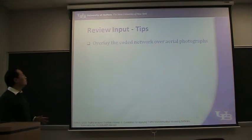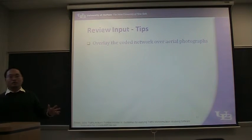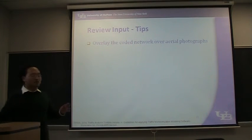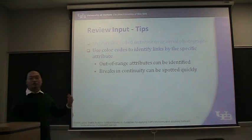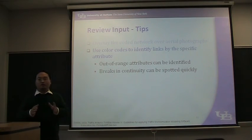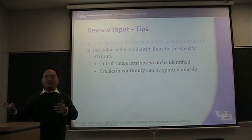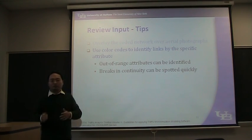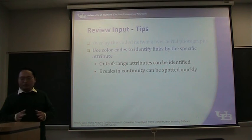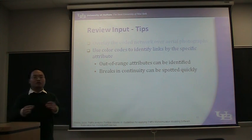Here are some useful tips. First, after you code your network, overlay it over satellite images to check if they are perfectly matched. Second, use color codes to identify your links by their attributes — this helps you easily identify out-of-range attributes. For example, use a special color to mark attributes outside an acceptable range so you can quickly identify which links have those issues. Third, if you have a series of links that should all share the same attribute value, such as the same speed limit, this consistency should be verified.